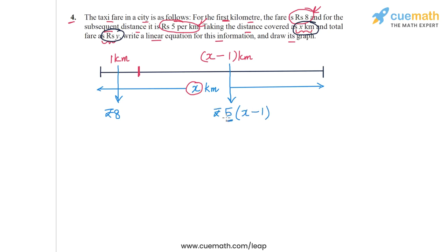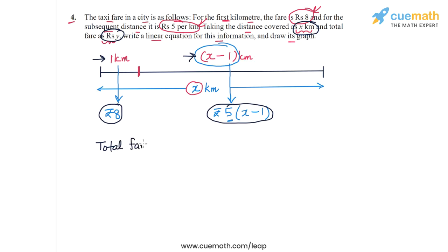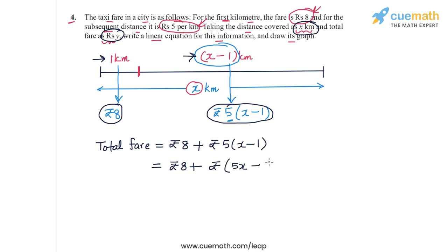We take the fare per kilometer and multiply it by the number of kilometers. For the first kilometer the fare is rupees 8, and for the remaining x minus 1 kilometers, the fare is rupees 5 times (x minus 1). So the total fare will be rupees 8 plus rupees 5 times (x minus 1), which simplifies to rupees 5x plus 3.